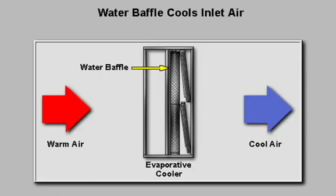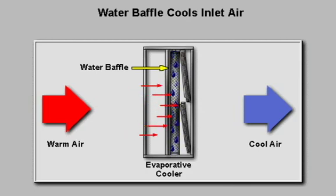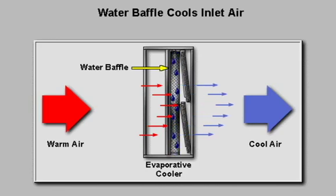The primary component of an evaporative cooler is a water baffle. Water is distributed over the top of the baffle and flows downward through the baffle media. Inlet air flowing perpendicular to the water flow evaporates some of the water. This cools the inlet air and increases its density, which in turn improves the power output of the turbine.